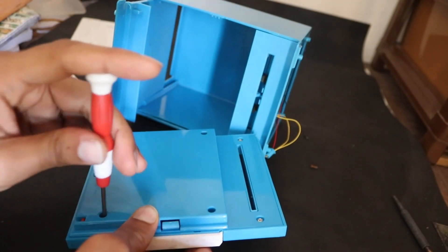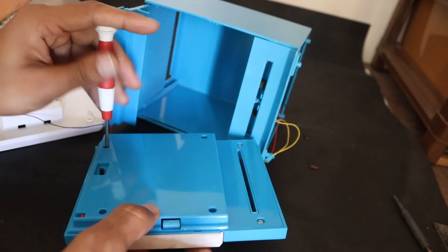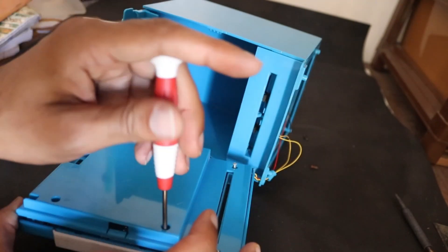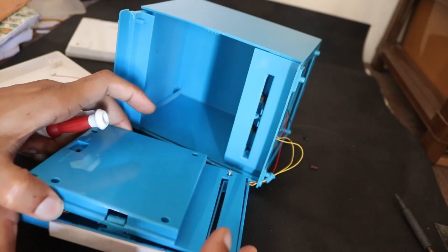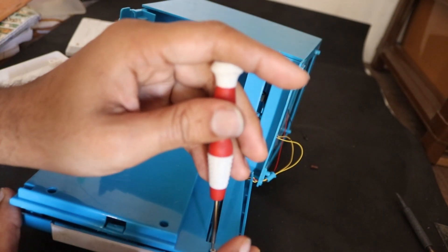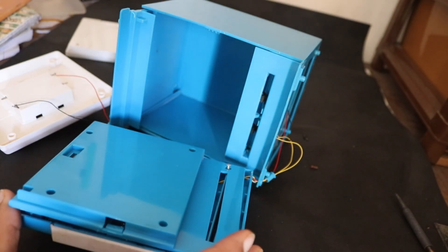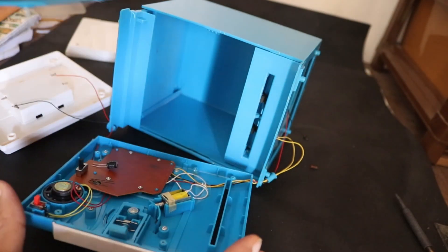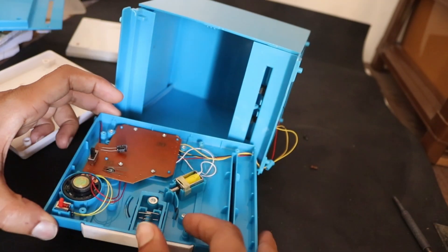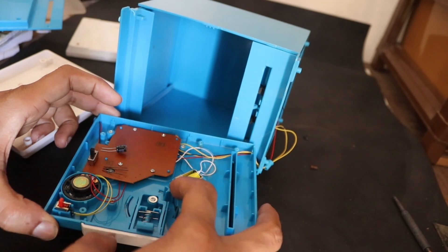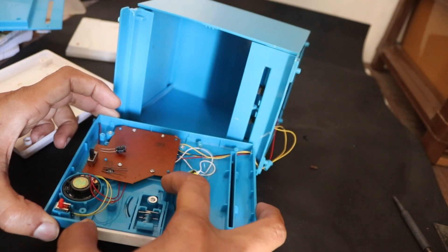Let me open this case. The brain of this bank is inside. This is all it contains - the circuit triggers the solenoid if the password is correct, and this way it opens the door.